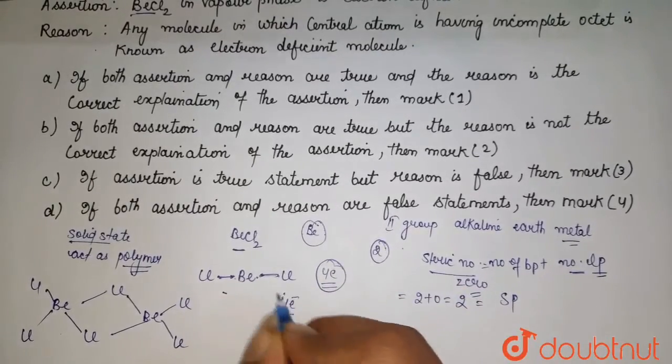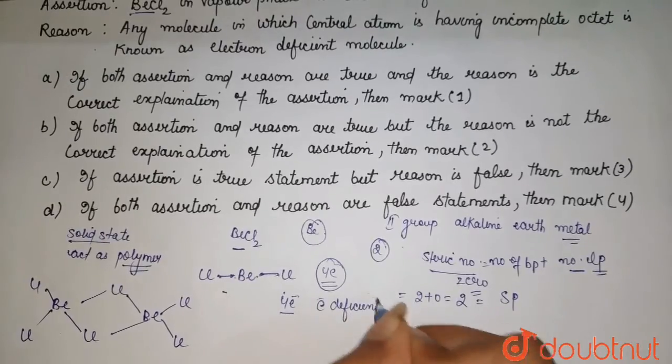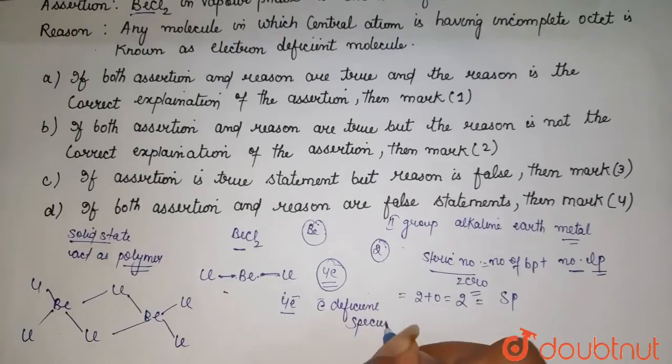And to complete its octet, it needs four electrons more. So that's why it is considered as electron deficient species. The species which have electrons less than eight electrons, that species considered to be as electron deficient species.